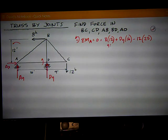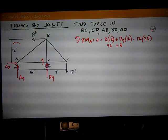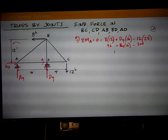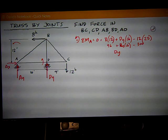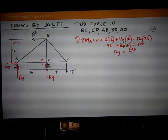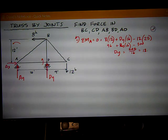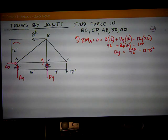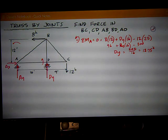I do the math. I've got 96 plus DY times 16 minus, this works out to be 300. So, DY combining 96 and negative 300 makes negative 204. Take it to the other side of the equal sign. I've got positive 204 divided by 16 equals 12.75 kips. Positive means my direction assumption was correct, so it is up.